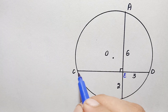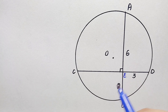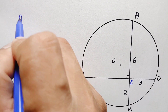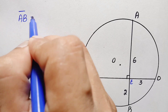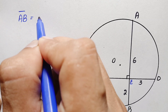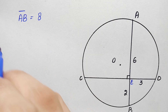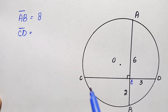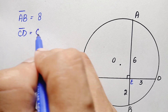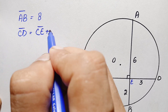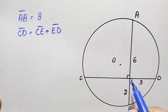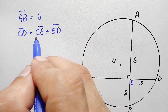First of all, we will try to find out the value of segment CE. The length of chord AB is 8 units, so we can write the length of chord AB is 6 plus 2, which is 8 units. The length of chord CD is the sum of CE plus ED. We have been given the value of ED which is 3 units, and we have to find out the value of CE.